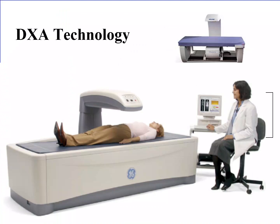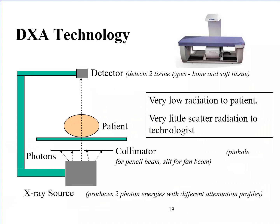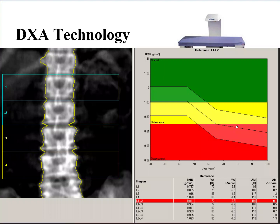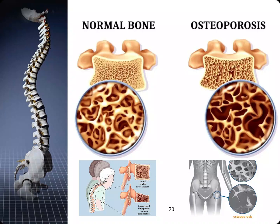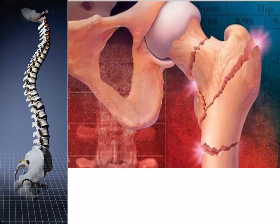Elderly patients with osteoporosis or suspected osteoporosis often get a DEXA scan to measure the density of the tissues of the spine. There is very low radiation to the patient and very little scatter to the technologist. Today we can help treat for osteoporosis — when DEXA scanning first came out, all it could do was let you know you had osteoporosis but there were no treatments. Osteoporosis is common; 44 million Americans have osteoporosis or low mineral bone density. It is a serious condition that causes fractures because of the fragility of the bones. Today treatments are effective and the fracture risk can be reduced by as much as 50 percent.